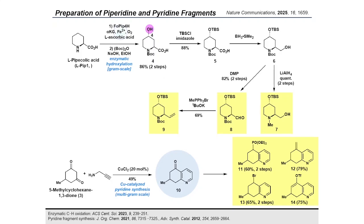Our synthesis started with preparing the piperidine and tetrahydroquinoline fragments for the late-stage fragment coupling. The C4 position of L-pipecolic acid was site- and stereoselectively functionalized through enzymatic oxidation by an α-ketoglutarate-dependent dioxygenase, FoPYP4H. Gram-scale enzymatic hydroxylation and subsequent Boc protection afforded the hydroxylated pipecolic acid derivative in 86% over two steps. After TBS protection of the resulting secondary alcohol, the carboxylic acid moiety was reduced to the corresponding primary alcohol. This substrate was further derivatized to several piperidine units including N-methyl substituent, aldehyde, and alkene.